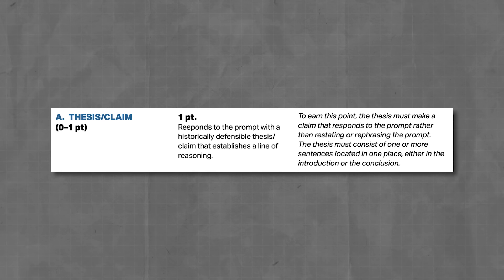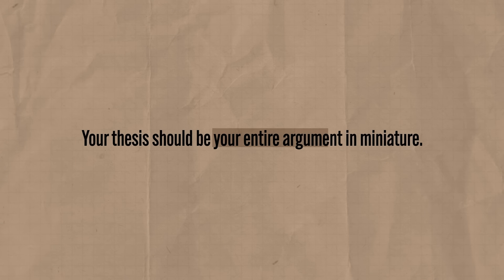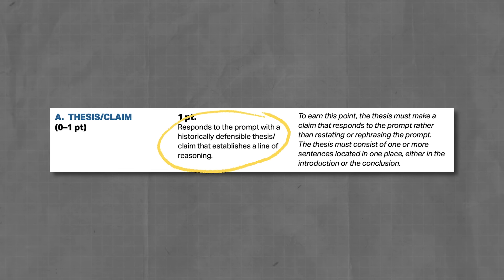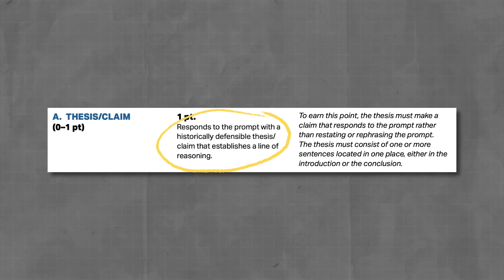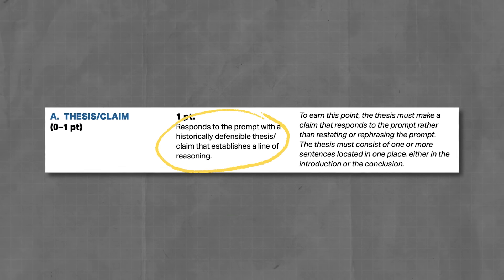Step three: get that seven. Let me go through the rubric point by point so you know exactly what you need to do to earn all seven points. The first point on the rubric is for the thesis — you can earn up to one point here. The thesis is arguably one of the most important things you'll write because it frames your entire argument. The rubric says you earn this point by writing a historically defensible claim that establishes a line of reasoning.